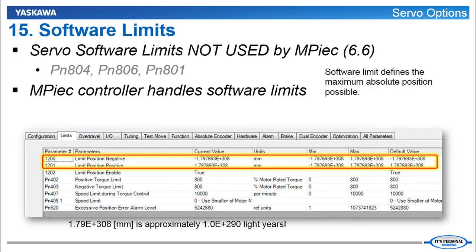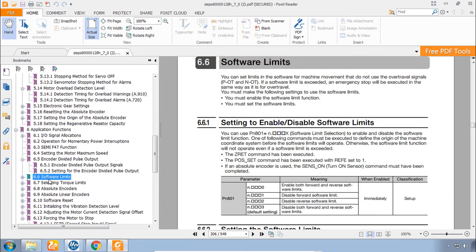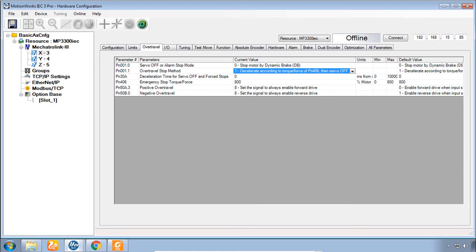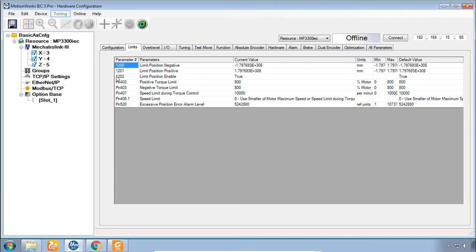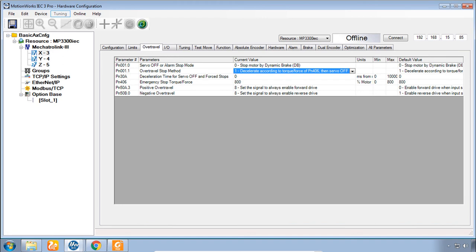Now for software limits. It's important to point out that the software limits shown here in the manual. In section 6.6 software limits these are not used by the MPIEC system. Instead look at MotionWorks IEC hardware configuration. And under the limits tab the controller itself has a parameter for negative and positive position limits. That's a controller parameter not an amplifier PN parameter. And by default these limits are enabled but if you check out the value. It's an astronomically high value. So the idea is that you would reduce these values if you want to use the software limits. And that will keep your absolute position within this range. And not allow the motor to travel outside the range that you've given. So these are completely optional because you could just rely on your programming or on the over travel inputs themselves. To keep the system within its designated area of motion.